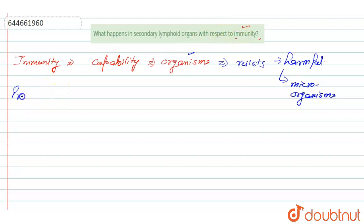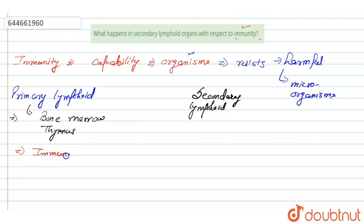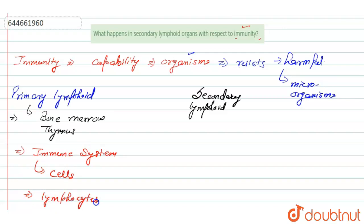Talking about lymphoid organs — there are two types: first is the primary lymphoid organ, and the second is the secondary lymphoid organ. The primary lymphoid organs include bone marrow and thymus. In both of these organs, immune system cells called lymphocytes are produced.